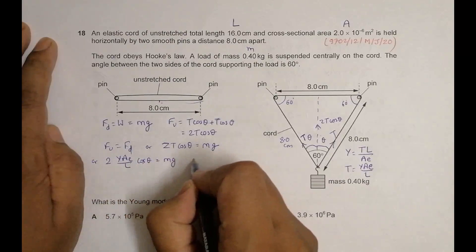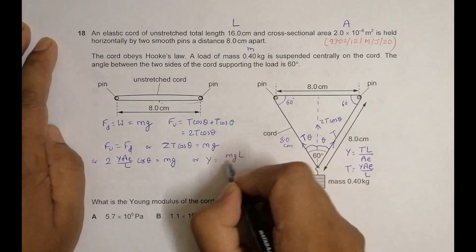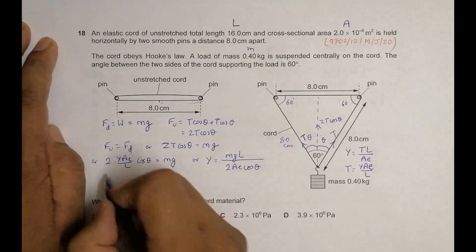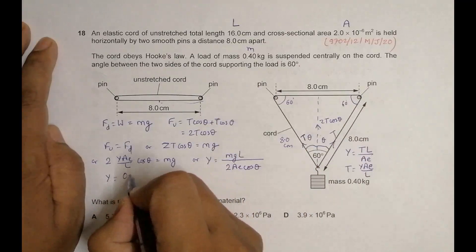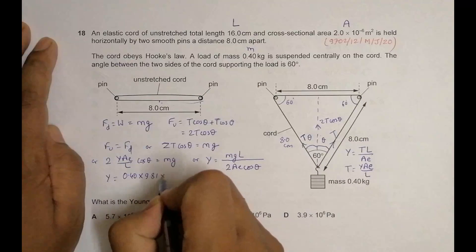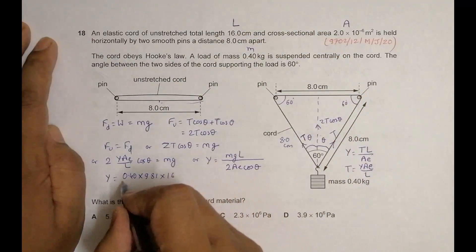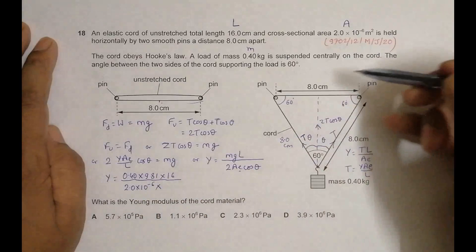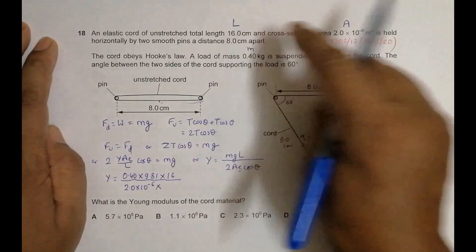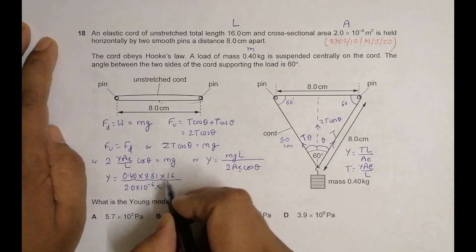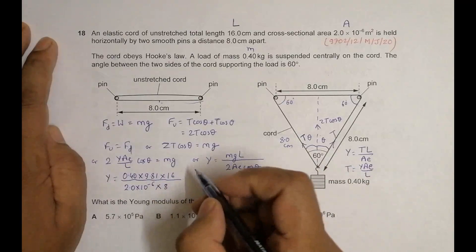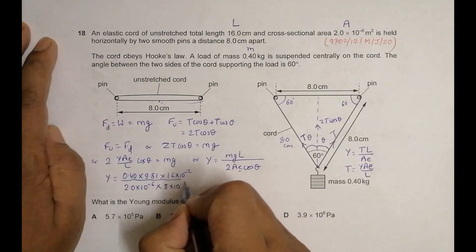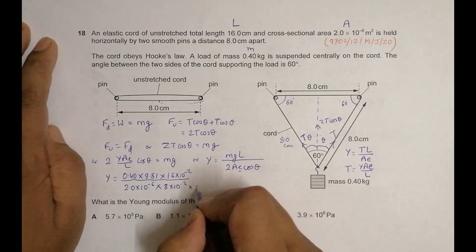Rearranging gives Y = MGL₀ / (2A × extension × cosθ). Substituting values: M = 0.40 kg, g = 9.81, original length L₀ = 16 cm = 16 × 10⁻² m, A = 2.0 × 10⁻⁶ m². The new length is 8 + 8 + 8 = 24 cm, so extension = 24 − 16 = 8 cm = 8 × 10⁻² m, and cosθ = cos 30°.